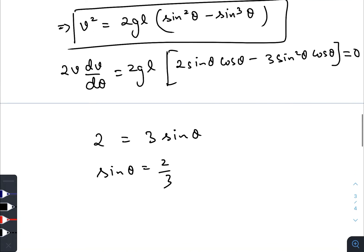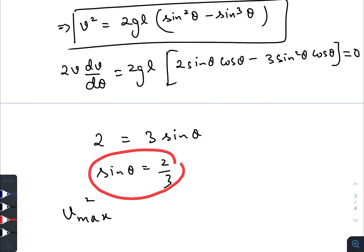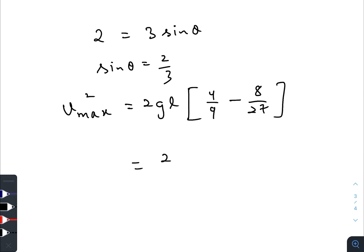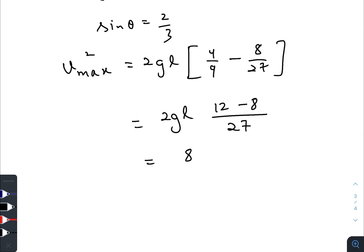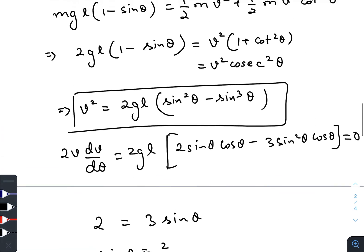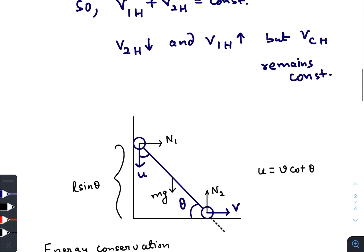Simplifying, we get 2 = 3·sinθ, so sinθ = 2/3. To find the maximum value of v, we substitute sinθ = 2/3 into the equation: v² = 2gl(4/9 - 8/27) = 2gl · (12 - 8)/27 = 8gl/27. Therefore, the maximum speed is √(8gl/27), which is also the speed of the lower ball when the upper ball loses contact.